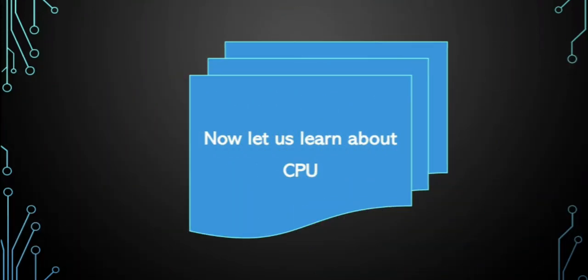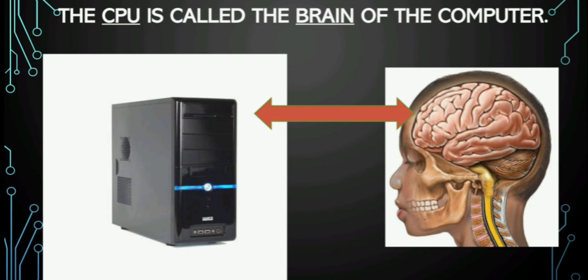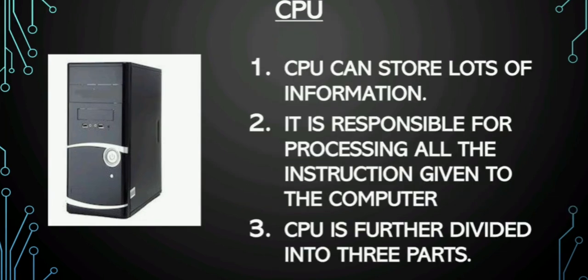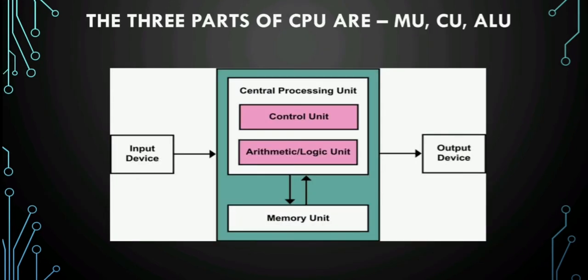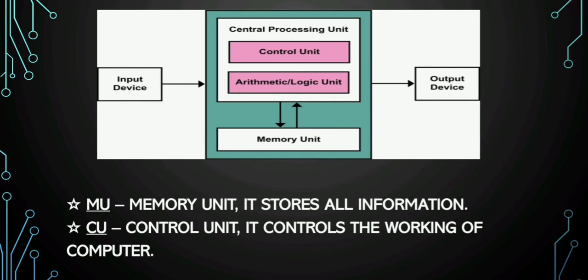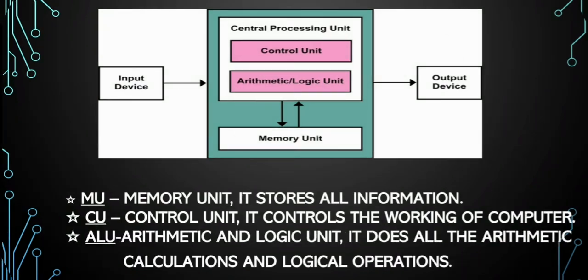Now let us study about the second main part of the computer, that is CPU. The CPU is also called the brain of the computer. Just like the human brain, it stores all the information and is responsible for processing all the instructions given to the computer. The CPU is further divided into three parts: CU, MU, and ALU — where MU stands for Memory Unit, CU stands for Control Unit, and ALU stands for Arithmetic and Logic Unit.